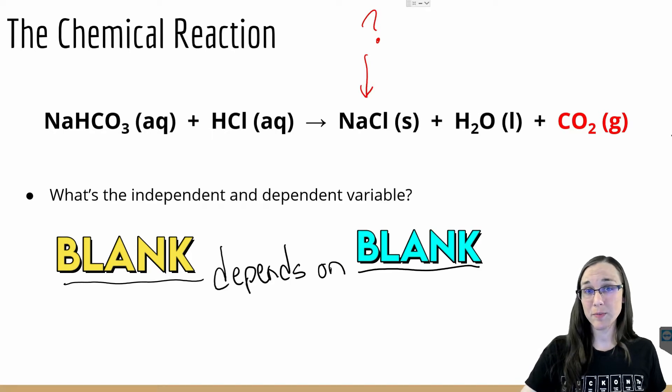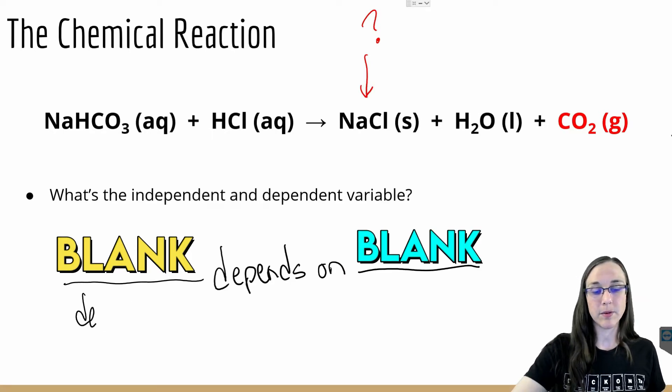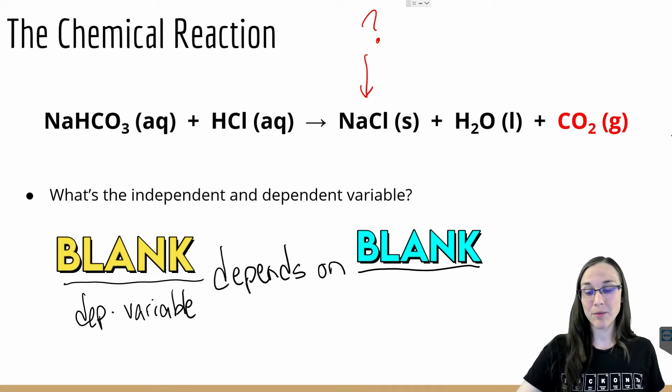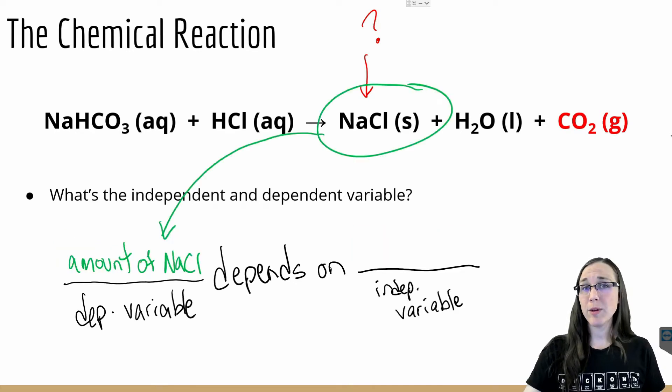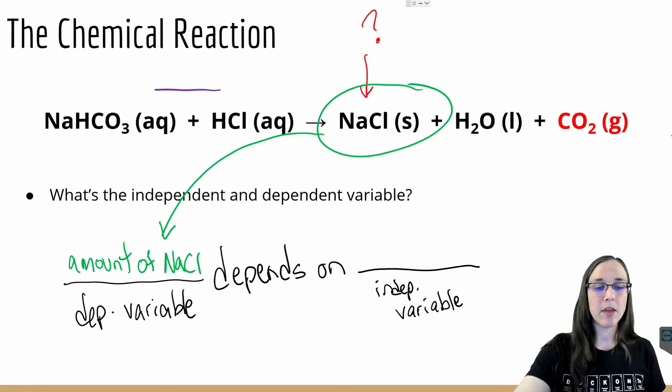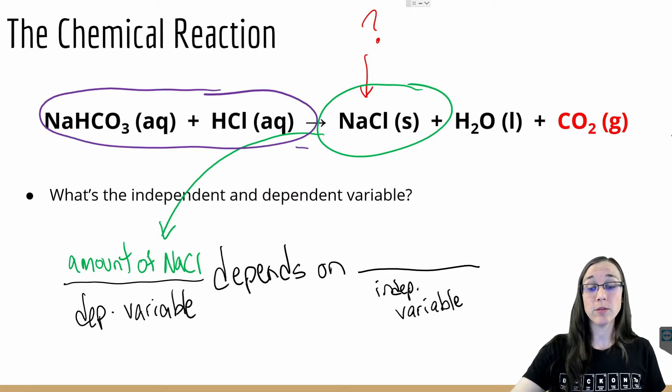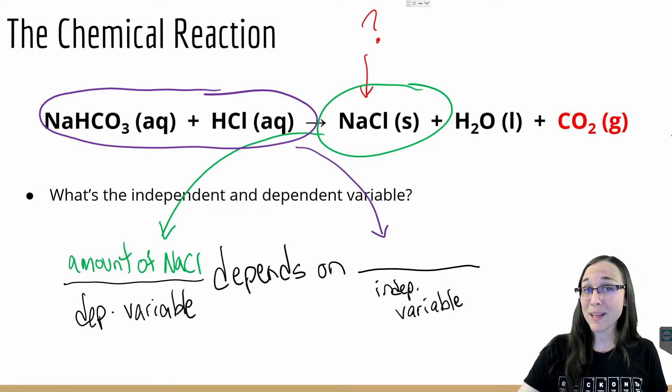Whatever fits in our first blank would be the dependent variable, and whatever would fit in our second blank would be the independent variable. So then we can say that the amount of salt that's created from this chemical reaction depends on the amount of reactants we use and which one is the limiting reactant.